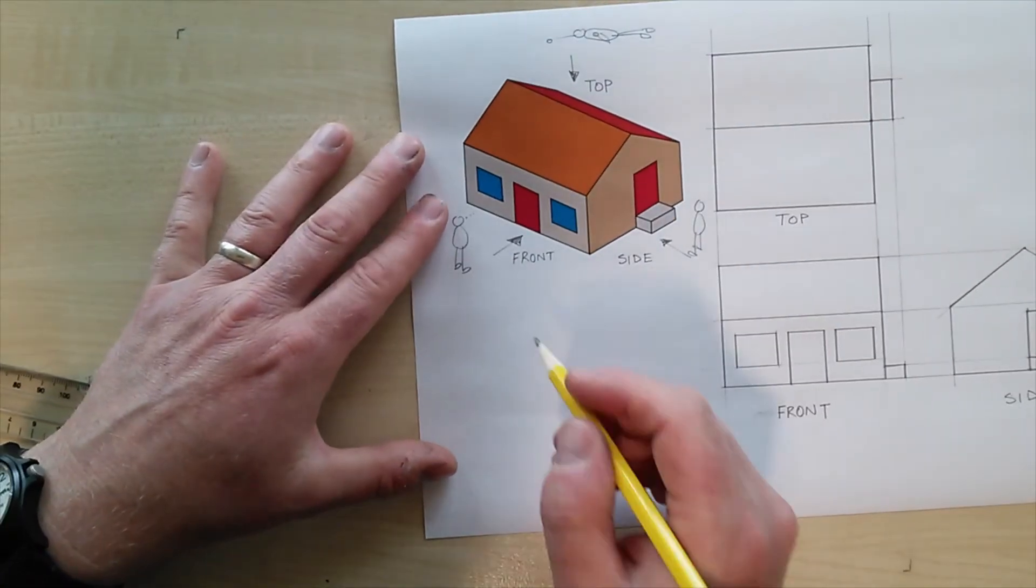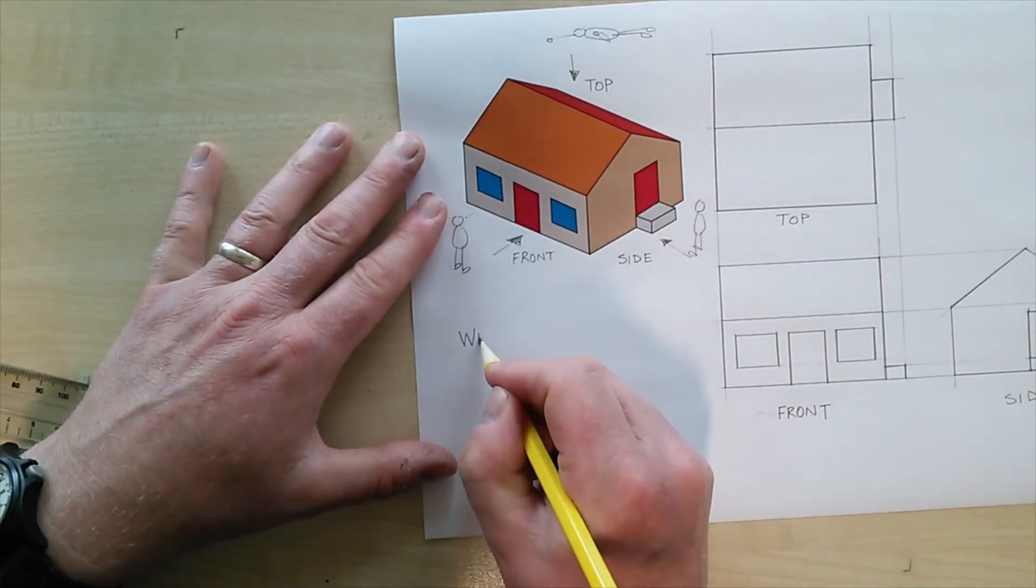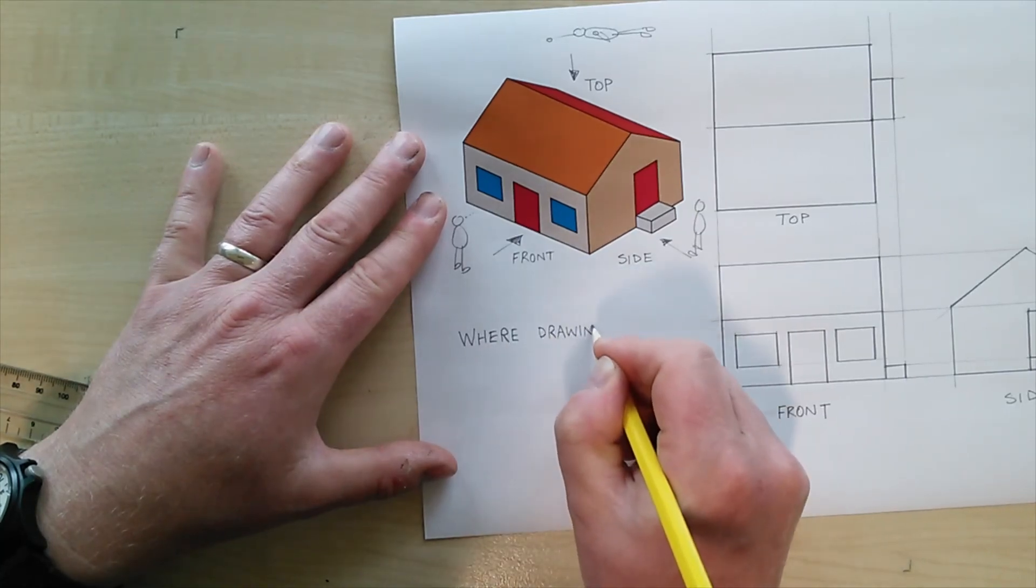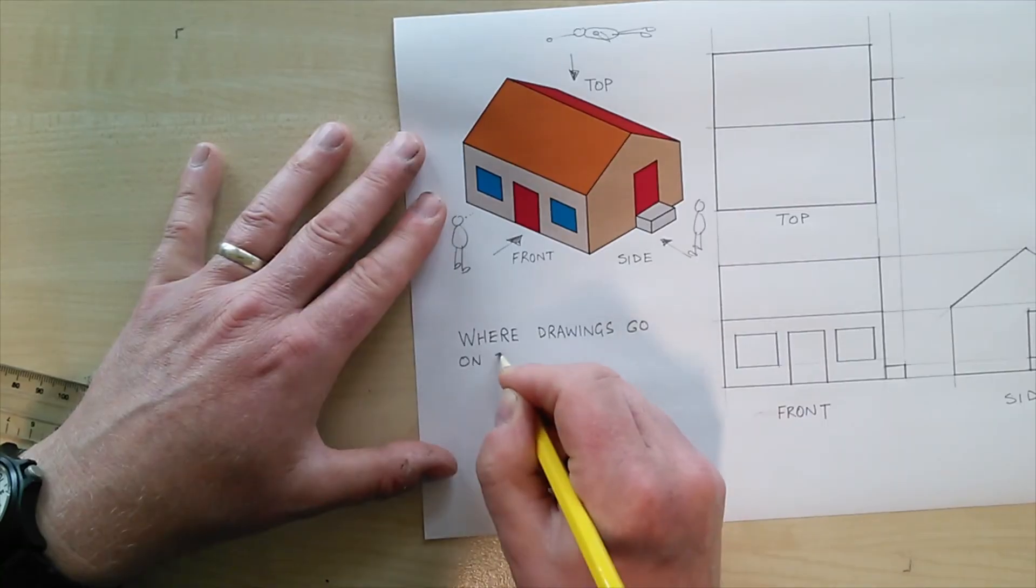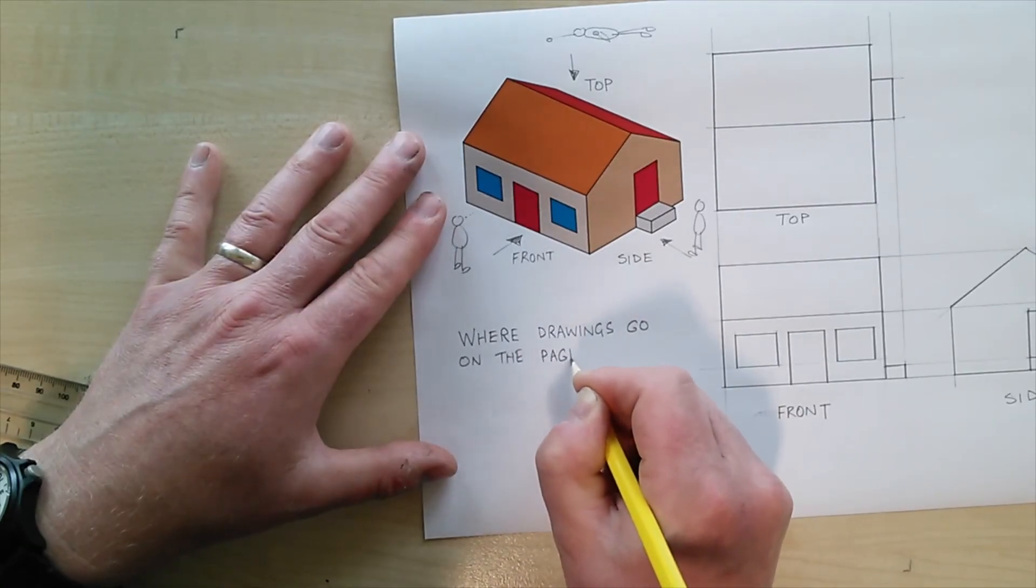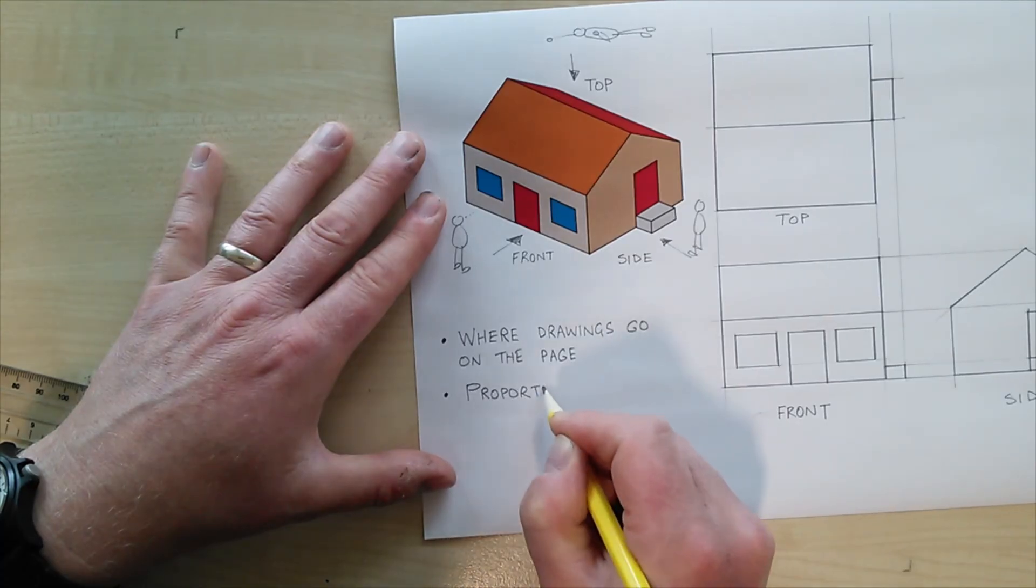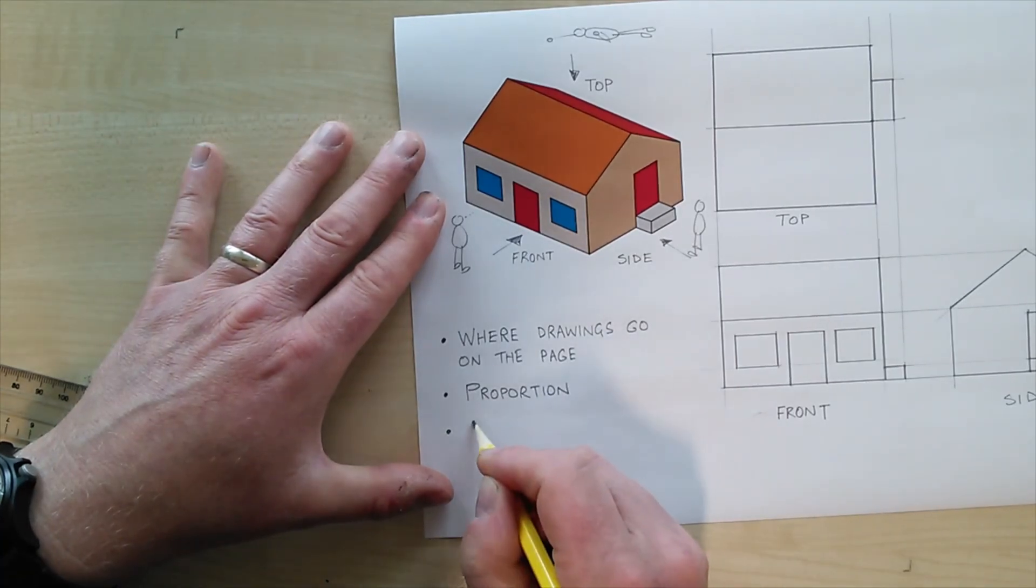And in short that's a really simple orthographic thing. We've learned quite a few things while watching this video. We've learned where to put our orthographic drawings, that we start with the front and we put the side to the side and the top on top.